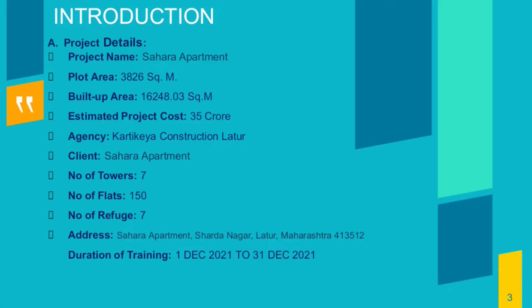The project details are as follows. It was a residential building project. The project name was Sahara Apartment, which had a built-up area of 16,248 square meters. The project cost was 35 crore and the agency building it was Kathi Construction from Latur. The number of towers to be built was 7, with around 150 flats. The duration of our training was from 1st December 2021 to 31st December 2021.